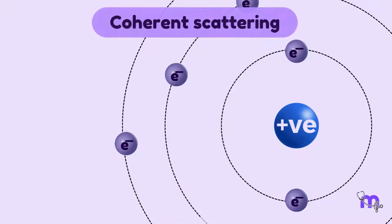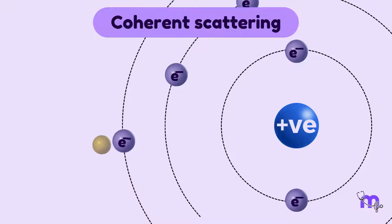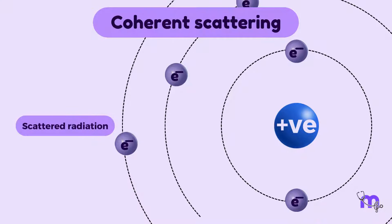In coherent scattering, the incident photon itself has low energy, thereby being unable to displace an outer shell electron, allowing it to vibrate in its position. Once the vibration settles down to normal, secondary radiation is produced.